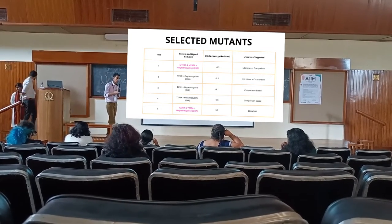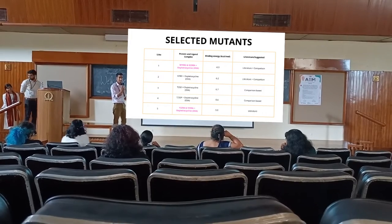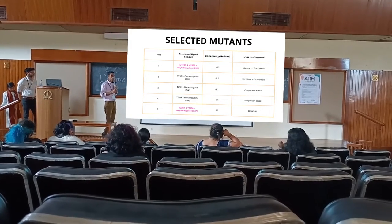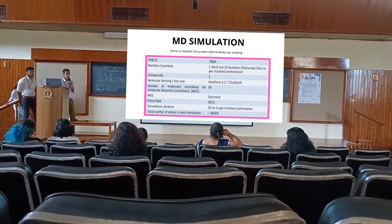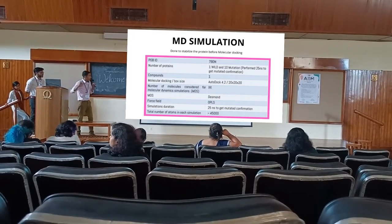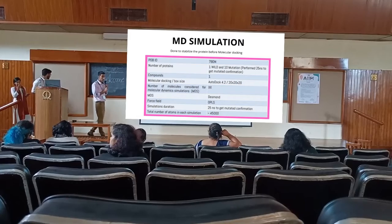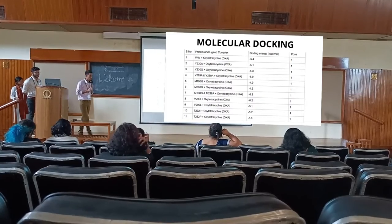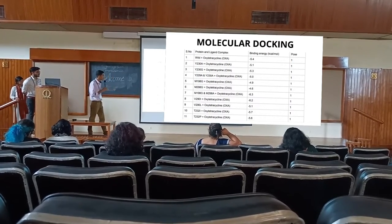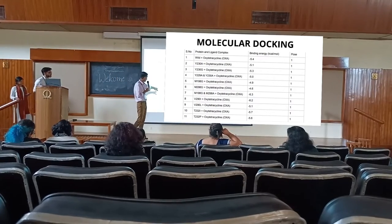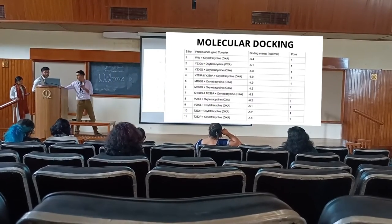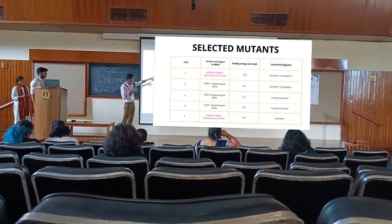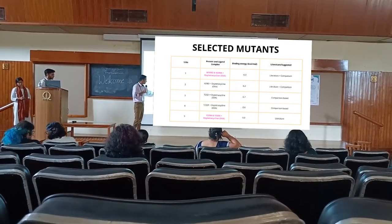For all proteins shown — the mutants and the wild type — we ran 25 nanosecond MD simulations to stabilize the protein, then performed molecular docking. The best results came from a double mutant, along with other promising results. Finally, we decided to proceed with two mutants: these are our best results — one double mutant and one additional specific mutant.